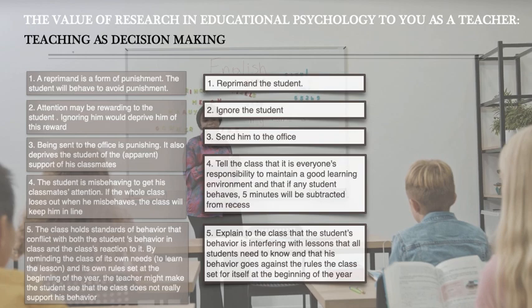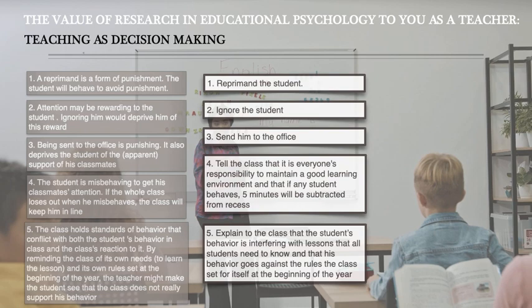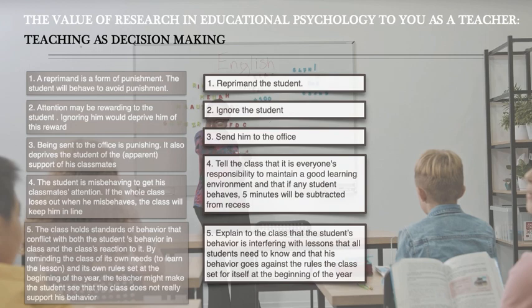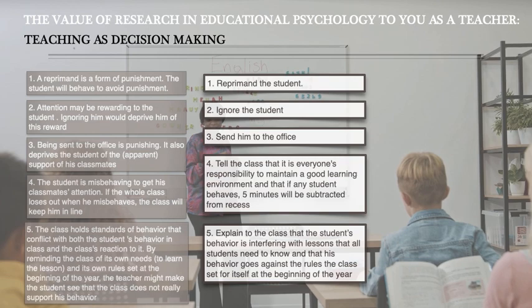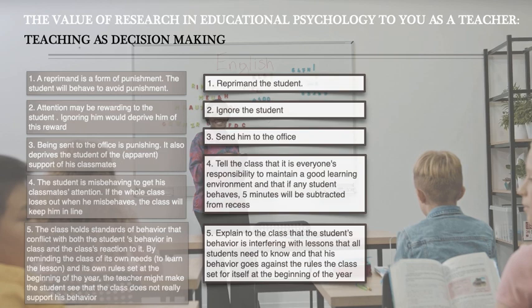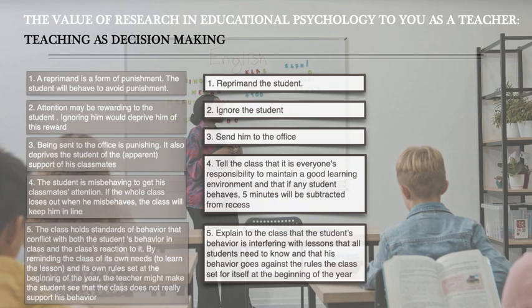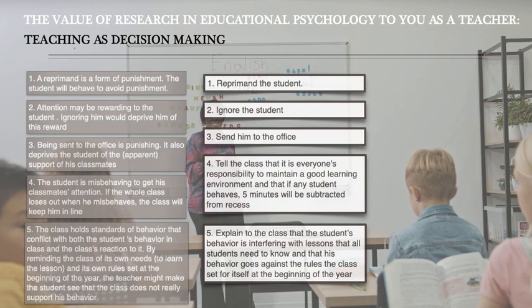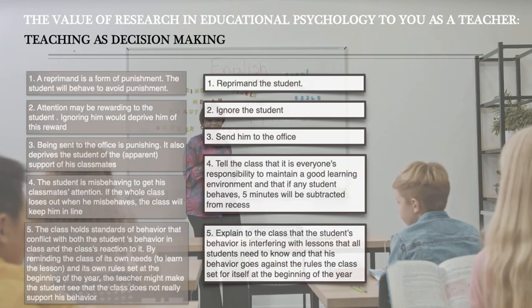Research in education and psychology has a lot to say about the decision you would make in this situation. Developmental research explains that adolescent students value their peer group and try to establish independence from adult control, often by breaking rules. Behavioral learning theories provide information on how to use punishment or reward for behavior. Research on classroom management strategies explains how to prevent and react to misbehavior. Research on rule-setting and classroom standards indicates that involving students in setting rules can increase academic achievement and appropriate behavior.